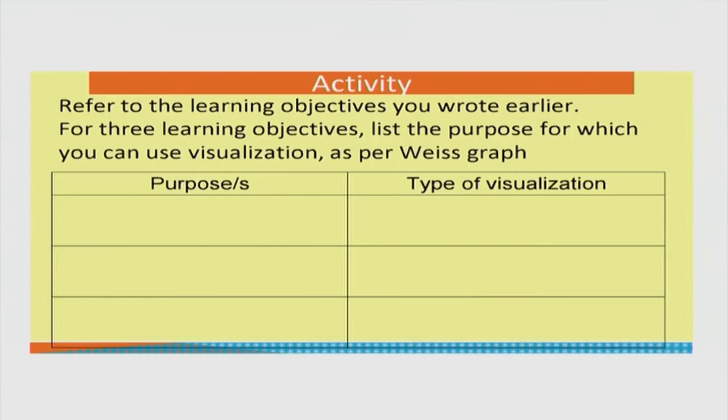With that, let us look at one small activity: for some three of the learning objectives you wrote earlier, list a purpose for which you can use a visualization. Essentially, the Weiss graph — even though you may not want to follow it exactly — can be thought of as a flow chart helping you decide: is there any movement, and am I illustrating a procedure or a concept? Ask those questions and you will more or less be able to arrive at the Weiss graph on your own.